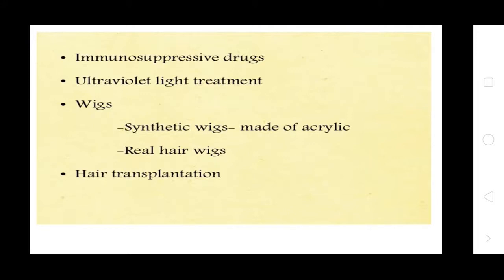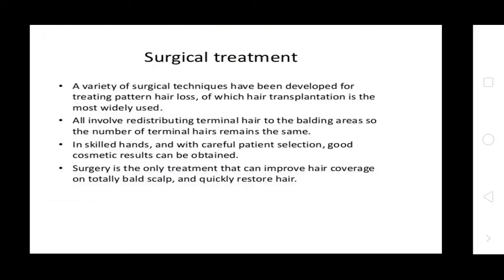Other treatments include immunosuppressive drugs, ultraviolet light treatment, and wigs — synthetic wigs made of acrylic or real hair. Surgical treatment: a variety of surgical techniques have been developed for treating pattern hair loss, of which hair transplantation is the most widely used. All involve redistributing terminal hair to the balding area, so the total number of terminal hairs remains the same. With skilled hands and careful patient selection, good cosmetic results can be obtained.